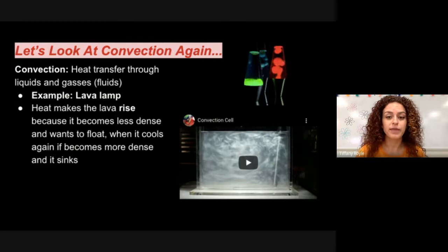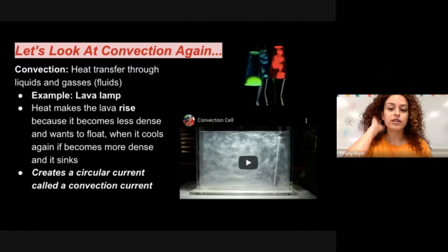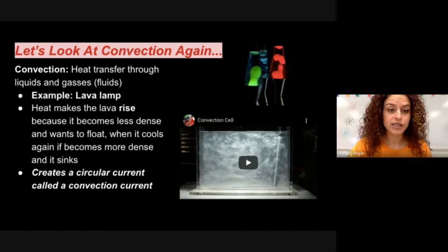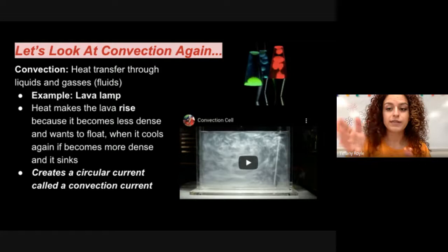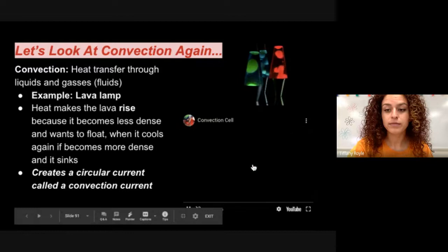So this is fluid movement due to heat differences, and we see that in our air as well. This creates a circular current, and that's called a convection current. So we're going to look at this video of a convection cell where instead of a lava lamp, he's using water to demonstrate how different temperature liquids move each other around. Let's check it out.